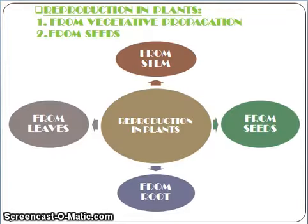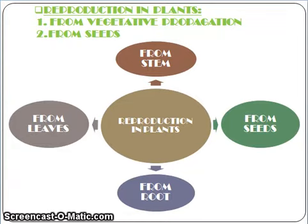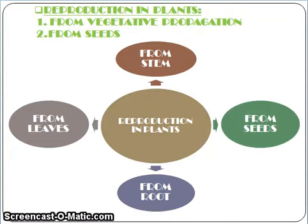Reproduction in plants: What is reproduction? It is the process by which living beings produce young ones of their own kind. Like all living beings, plants also reproduce. There are two methods of reproduction: first, from seeds; and second, from vegetative propagation. Vegetative propagation is one way of reproduction in plants where plants reproduce from vegetative parts such as stem, root, and leaves. In this session, we shall learn about growing plants from seeds and dispersal of seeds.